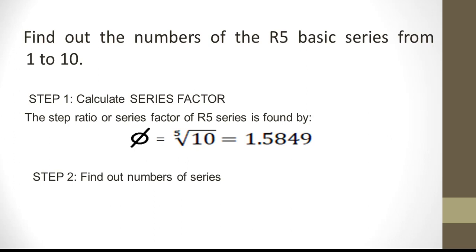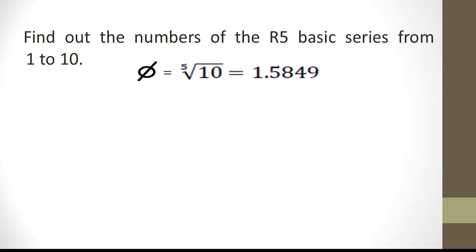The next step is to find out the numbers of the series. The first number n₁ is 1. The second number n₂ is found as step ratio times n₁, which turns out to be 1.5849. We'll round off and make it 1.6.